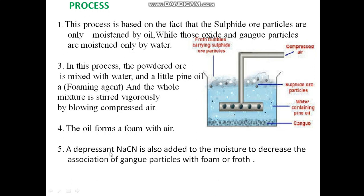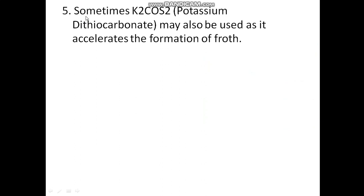A depressant, sodium cyanide, is added to the mixture to decrease the association of gangue particles with the foam or froth — so that the gangue particles do not get attached to the foam. Also, potassium dithiocarbonate (K₂CS₂) may be added as it accelerates — that is, increases — the formation of froth.